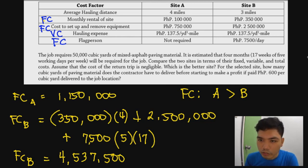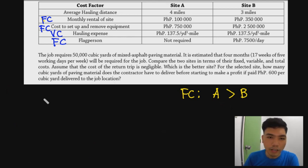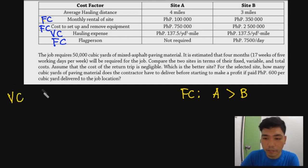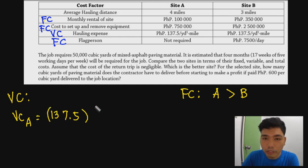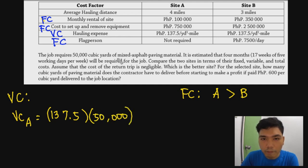For variable costs, the only variable cost here is the hauling expense. Variable cost for Site A: 137.5 pesos per cubic yard per mile, times 50,000 cubic yards, times 4 miles (one way only, since the return trip cost is negligible). This gives 27,500,000 pesos for Site A's variable cost.